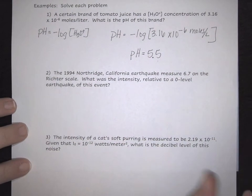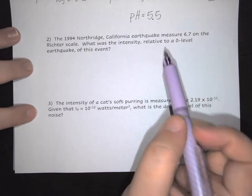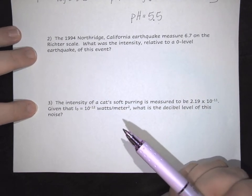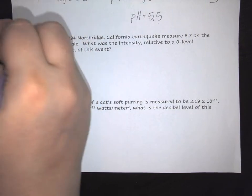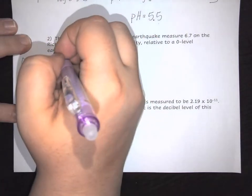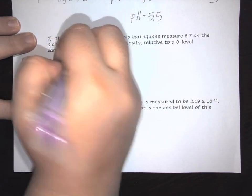In this next example, a 1994 Northridge, California earthquake measured 6.7 on the Richter scale. What was the intensity relative to a zero-level earthquake? When we have a zero-level earthquake, that essentially gives you an initial intensity of 1.